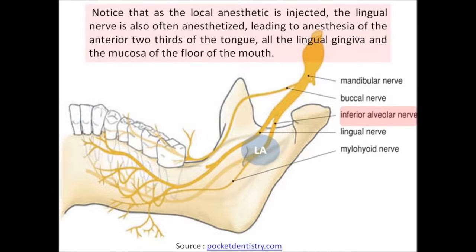This image shows the local anesthetic after it has been injected. Notice that some of the local anesthetic also diffuses to the nearby lingual nerve. So many patients will manifest anesthesia of the anterior two-thirds of the tongue, all the lingual gingiva, and the mucosa of the floor of the mouth — all supplied by the lingual nerve.